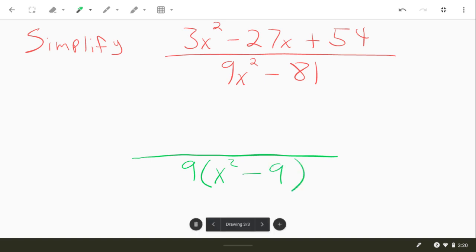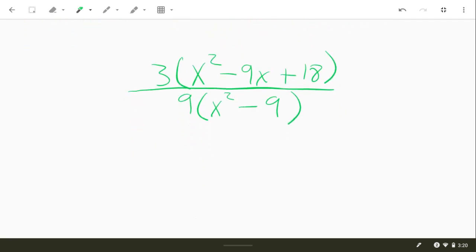And then on the top, they have a 3 in common, all three terms, 3, 27 and 54. 3 times 9 will give us 27 and 3 times 18 will give us the 54.